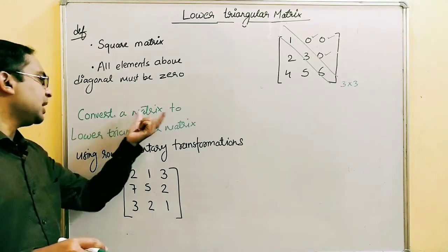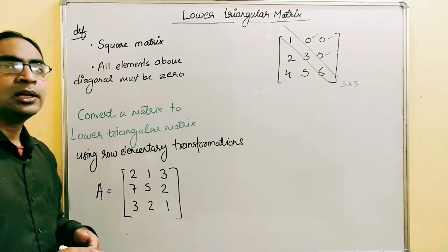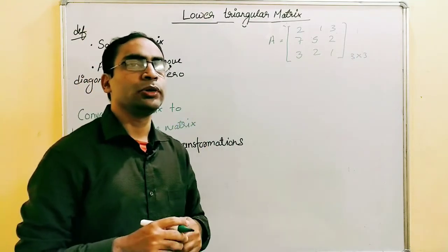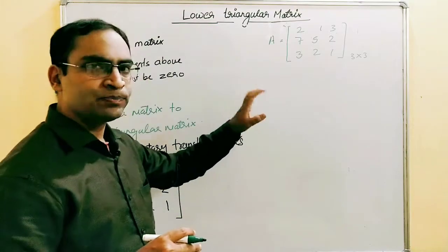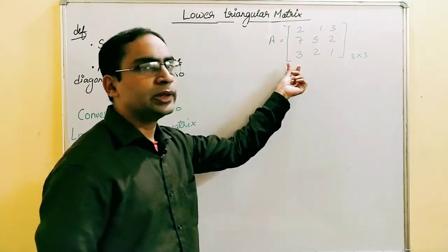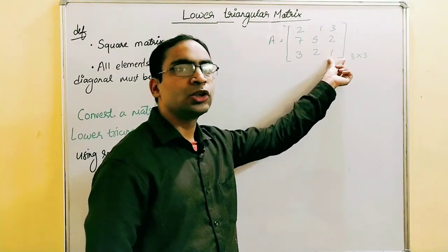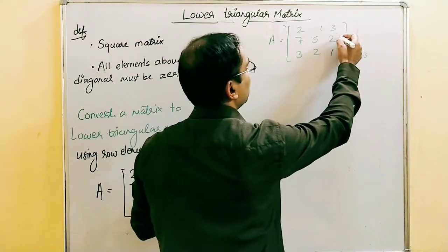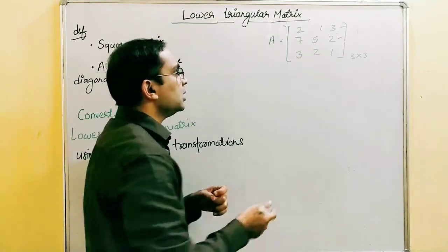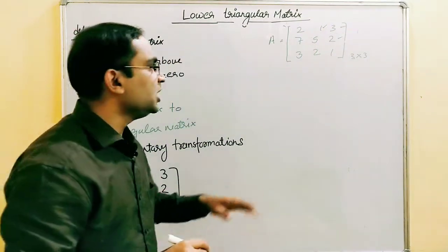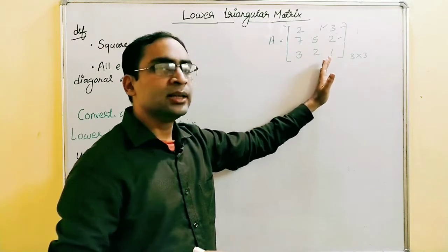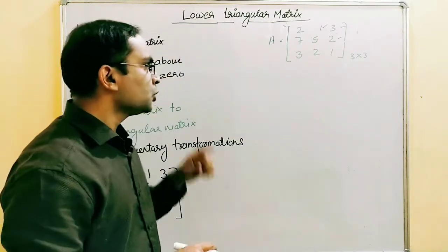Now let's see how we can convert a matrix to lower triangular matrix using row elementary transformation. Before starting, there are three rules. Rule number one: we'll always start from the last column and move to the first column — that means we'll convert all the required elements of the last column to zero first, then move to the second column, and then if required, the first column.